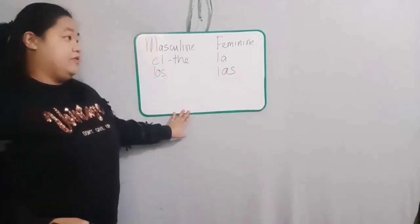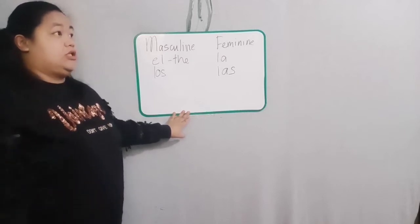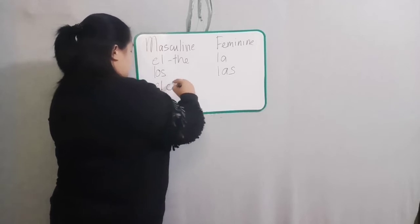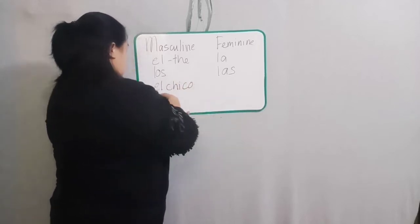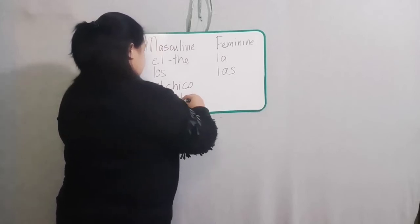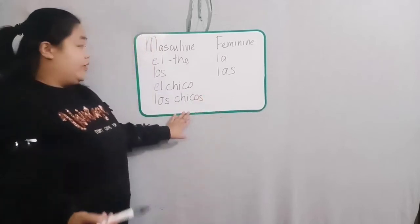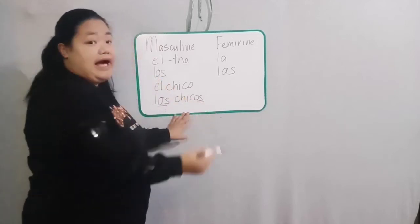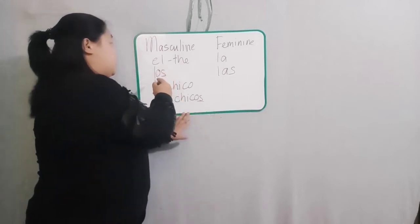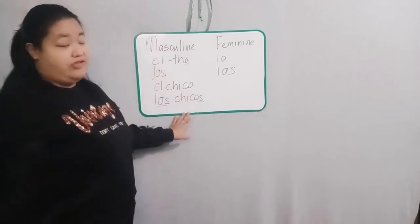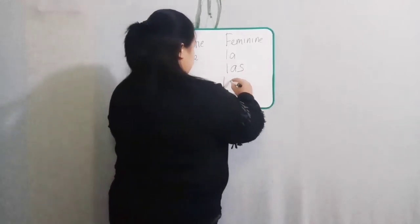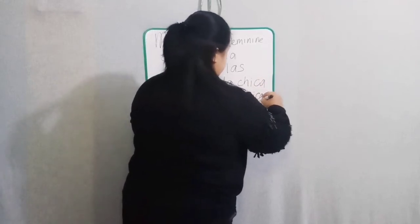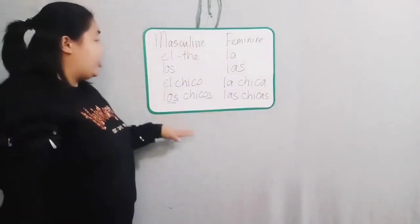Let's give examples of how this works for singular and plural. For masculine: 'el chico' means 'the boy', and 'los chicos' means 'the boys'. Notice that when you use 'los', the plural article, you also make the noun plural. For feminine: 'la chica' and 'las chicas'. So that gives us: the boy, the boys, the girl, the girls.